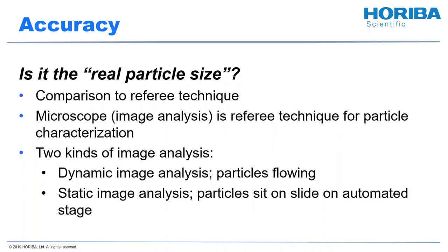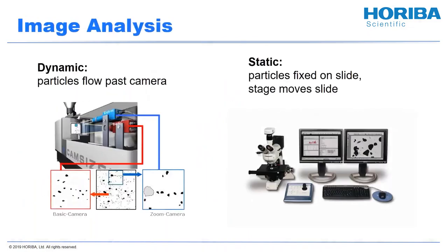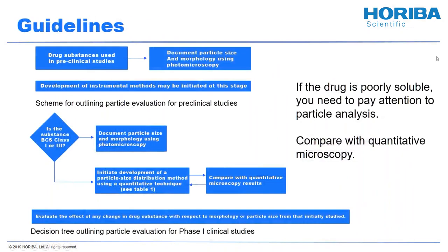There are two kinds of image analysis: dynamic image analysis, with particles flowing in front of the camera, and static image analysis, where particles sit on a slide at an automated stage. Dynamic is on the left — you have the funnel and the particles are falling in front of a white screen as cameras take high-speed pictures. Static looks very much like a classical microscope with powerful software and an automated stage for analyzing particle size and shape. We have other webinars on image analysis. If you look at FDA guidelines, they're pretty good guidelines for all particle analysis method development.